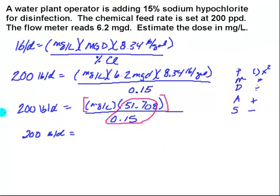So we're going to go ahead and bring that down. And what I end up with is milligrams per liter, which is my unknown, and I'm going to divide 51.708 by 0.15. So we're going to do that division on the calculator, and we get 344.72.